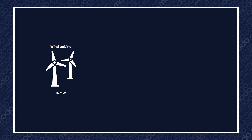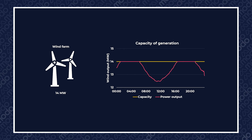In simple terms, the capacity of a generation unit specifies its maximum instantaneous output. So if you hear someone say, we've just built a 14 megawatt wind farm, the maximum output of the turbines at any one time is 14 megawatts.